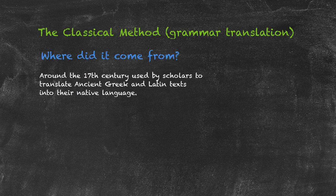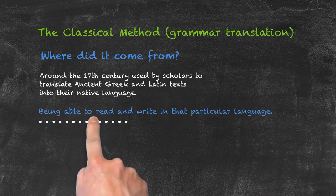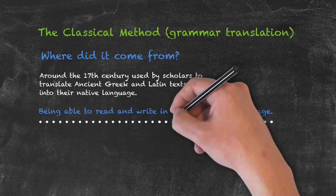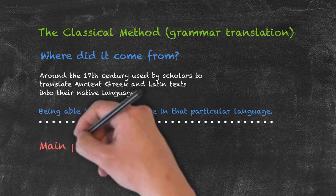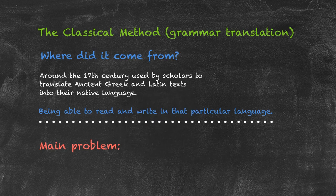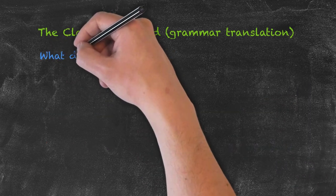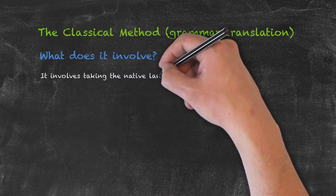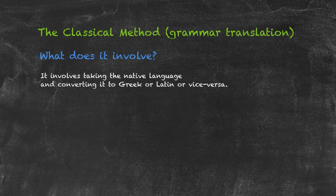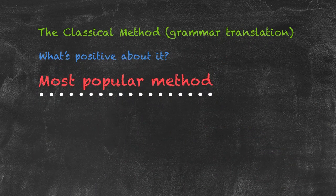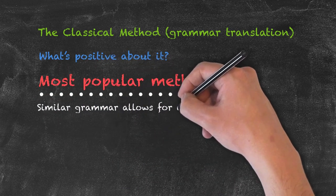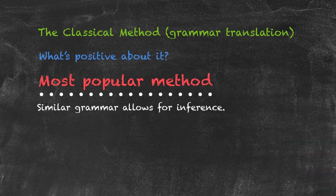The whole idea of grammar translation was based on being able to read and write in a particular language — it was never intended for the learning of speaking. Strangely, this is actually the most popular method for teaching languages throughout the world, despite not developing speaking skills. What does it involve? Taking the native language and converting it to Greek or Latin, or vice versa. What's positive about it? If your grammar structures are similar, it allows you to infer meaning from the context of a particular sentence.